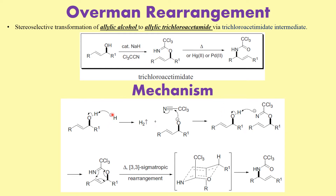We use a catalytic amount of sodium hydride, so we initiate hydrogen abstraction to give us the trichloroacetamide intermediate, which is perfectly set for the 3,3-sigmatropic rearrangement. The reaction is stereoselective, and it proceeds via a chair conformation.